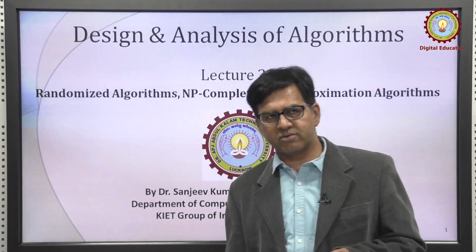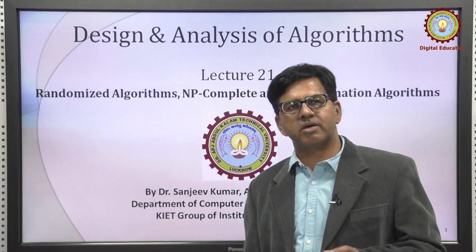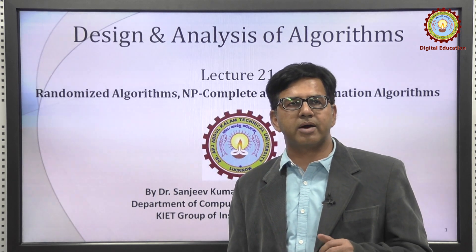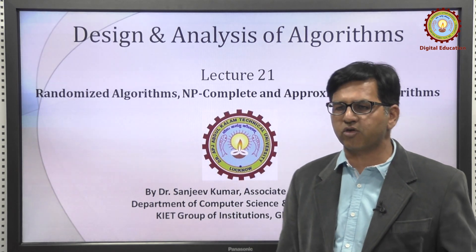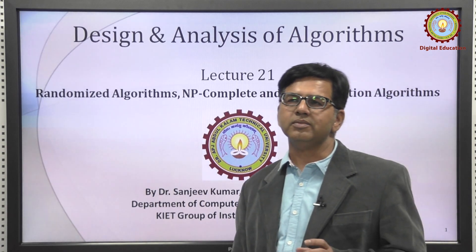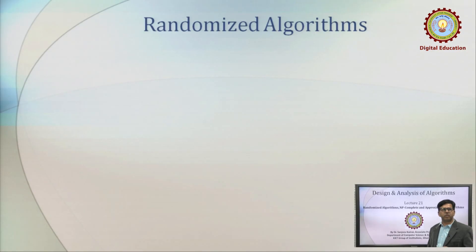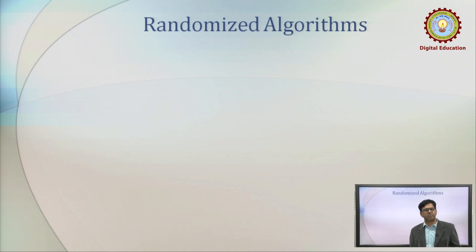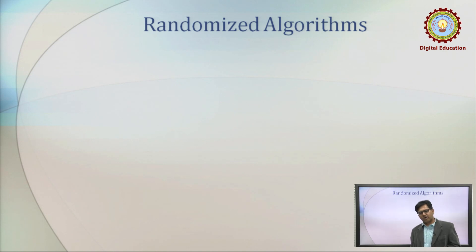In this chapter we have three topics: one on randomized algorithm, one on NP-complete algorithm, and approximation algorithm. Now, what is meant by the randomized algorithm? We have studied different types of algorithms, but when it comes to randomized algorithms, it gives the sense that there is some characteristic of randomness — there is some role of randomness within the algorithm.